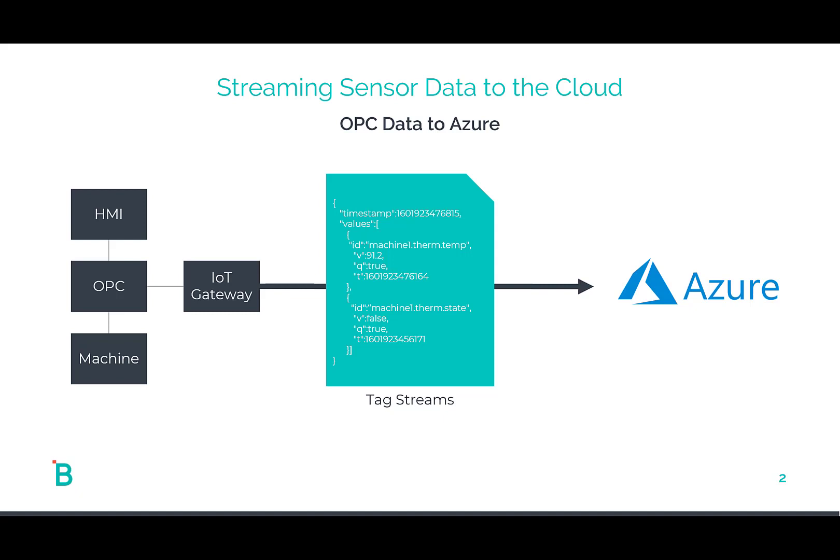Back when cloud came around in Azure, what we said was: okay, we're going to create an IoT gateway. We're going to connect that to the OPC server and we're going to take those tag streams and send them out to the cloud in a JSON format that looks something like this. And then we wiped our hands with it and said, machine data is in the cloud, we're good.